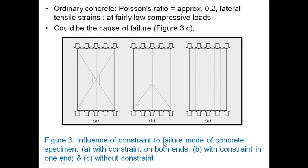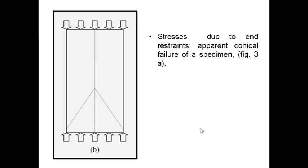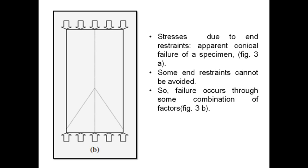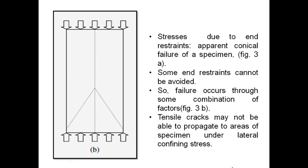Figure 3 shows the influence of constraint on failure mode of concrete specimen. Figure A shows with constraint on both ends. Figure B shows with constraint only at one end, whereas figure C shows without constraint. It clearly shows the difference in failure modes. Stresses due to end restraints create apparent conical failure of a specimen. Some end restraints cannot be avoided, so failure occurs through some combination of factors as shown in figure 3B. Tensile cracks may not be able to propagate to areas of specimen under lateral confining stress.